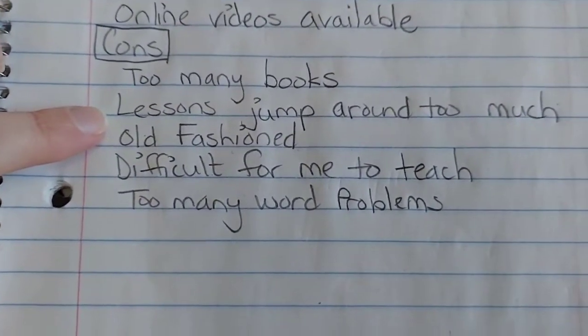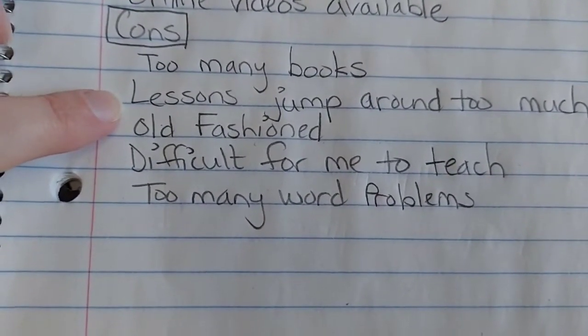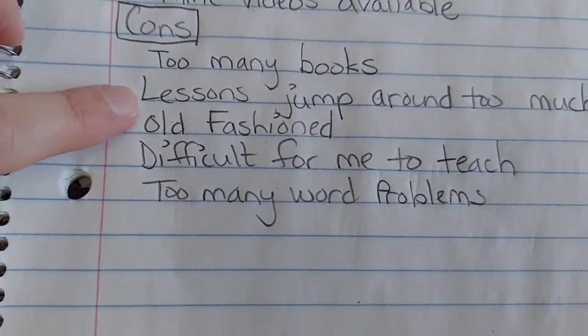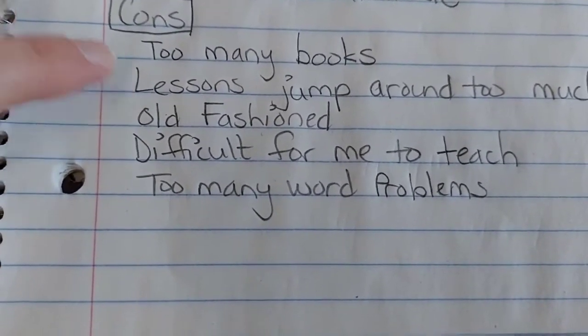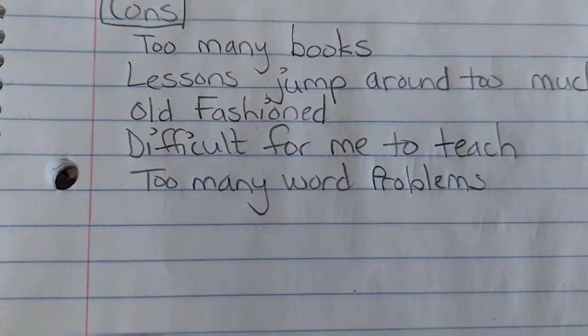I feel like the lessons jump around too much. Like they're not very organized. They don't take baby steps. Like there would be one concept that was taught in chapter 2 and then he would go to another concept in chapter 3 and he wouldn't revisit that chapter 2 concept again until like chapter 5 or 6 or something.